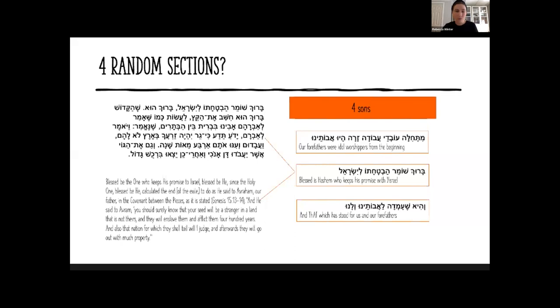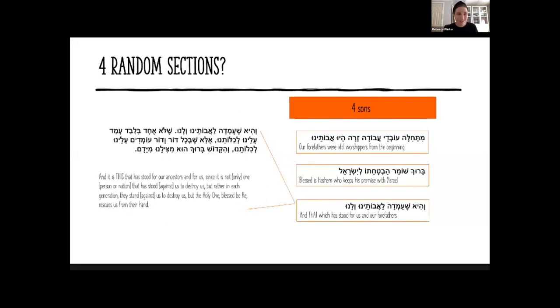I'll read it for you: Baruch Shomer Havtachato L'Yisrael, blessed is Hashem who kept his promise to Israel. Hakadosh Baruch Hu calculated the end of our exile. How? As He said to Avraham Avinu in the Brit Bein HaBetarim: 'You should know that your children will be strangers in a strange land, and they're going to suffer in this land. They will be oppressed for a 400-year period.'